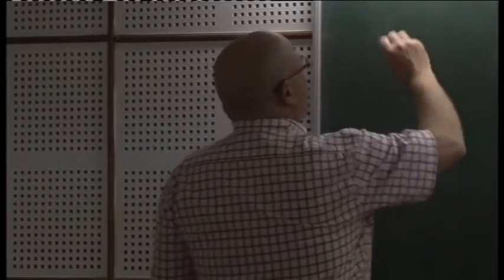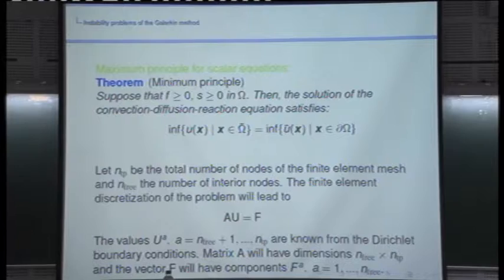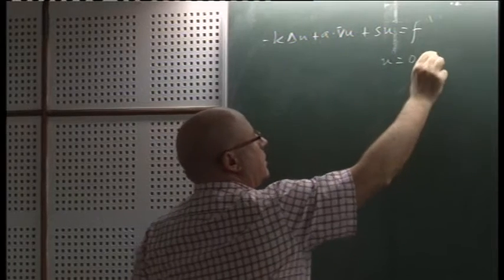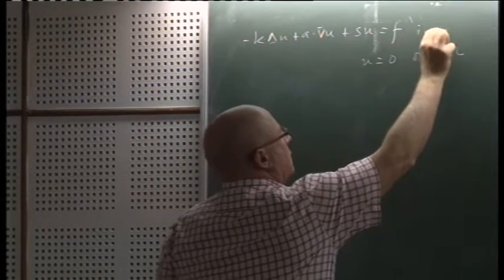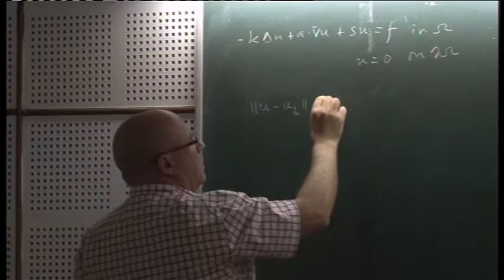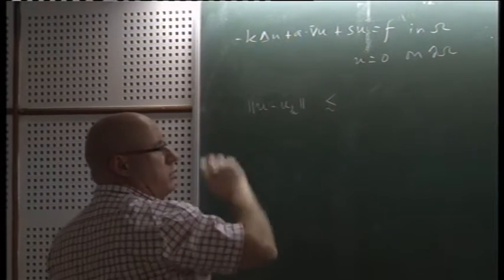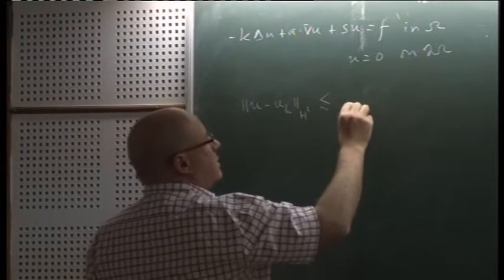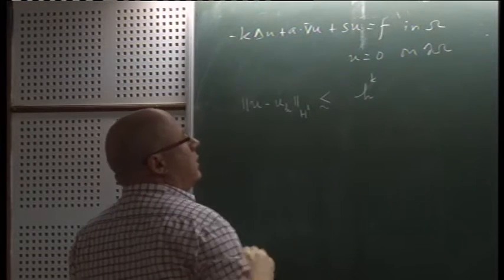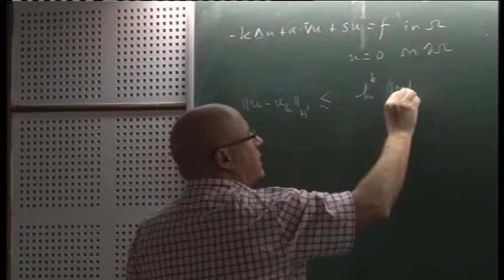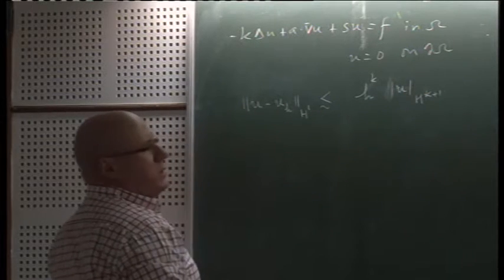Summarizing what we have seen this morning: we are solving the convection-diffusion-reaction equation with, for simplicity, homogeneous Dirichlet boundary conditions. The difference between the exact solution and the finite element solution behaves, in the H1 norm, as h to the power of the polynomial order multiplied by the semi-norm of the exact solution in H^{k+1}, if it is regular enough.